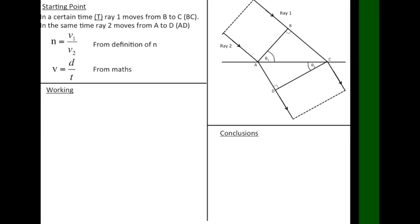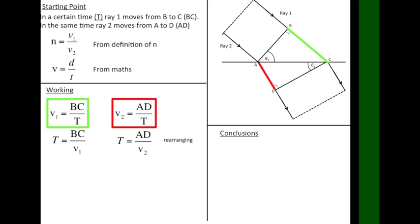Substituting into the speed definition for the ray in air yields this, and doing this for the ray in glass gives this. We can rearrange both equations to make T the subject, and now if both BC over V1 and AD over V2 are equal to T, then they must also be equal to each other, so we combine them. Finally, rearrange these and we have V1 over V2 is equal to BC over AD.